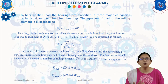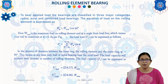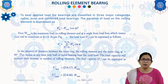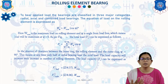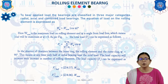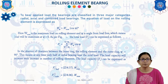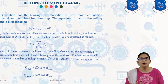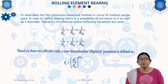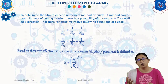The majority of rolling bearings are lubricated by grease and liquid lubricants. Seals are used to retain the grease within the bearings. The liquid lubricants require some sort of circulating system. To determine the film thickness, a numerical method or curve fit method can be used.